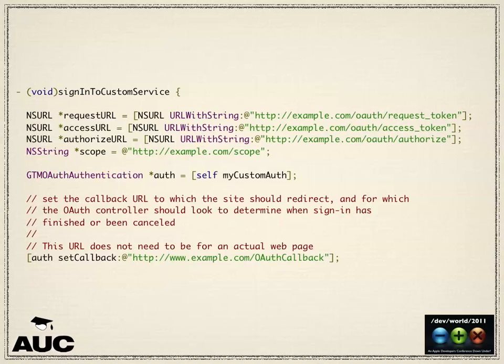This is where you provide the request access and authorization URLs. There's also a scope parameter which some OAuth providers use to set permissions. For Facebook, for example, you can specify particular permissions — access to send emails, basic information, manage pages, and so on. You can also set the callback manually, which is recommended for most OAuth services.